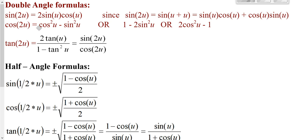Double angle cosine actually has three options: either cosine squared u minus sine squared u, or 1 minus 2 sine squared u, or 2 cosine squared u minus 1. If you plug into the cosine of u plus u, you get the first one. If you use your Pythagorean theorem identities, then you can get the second two from there.